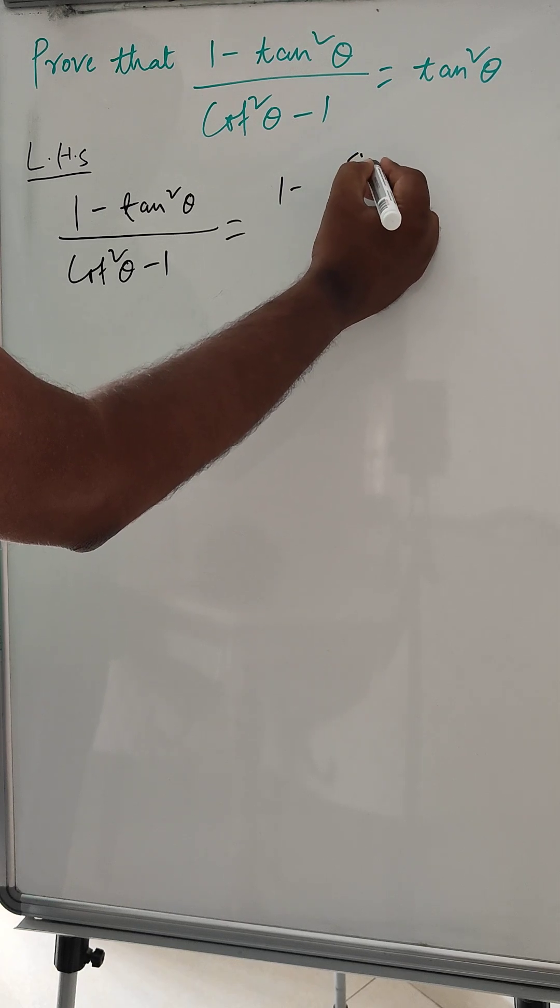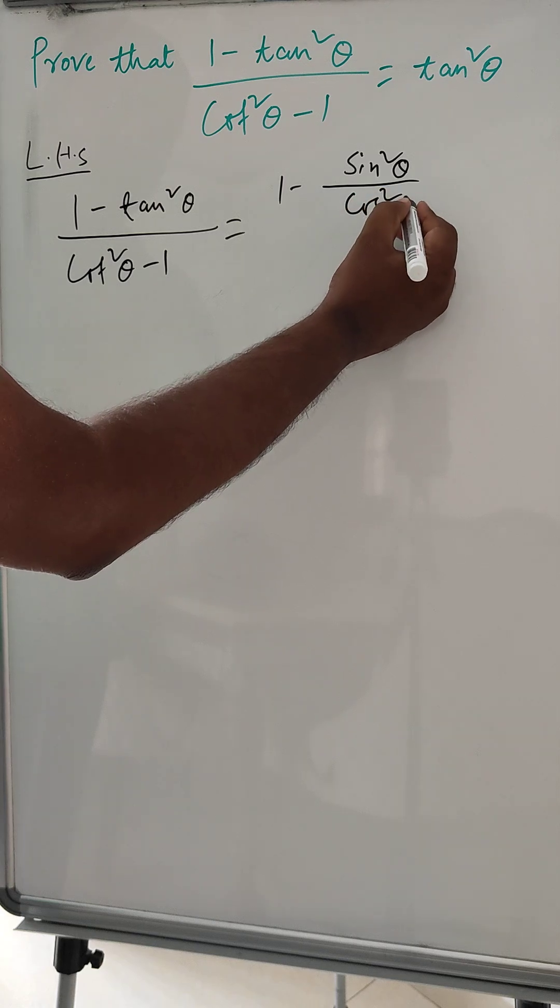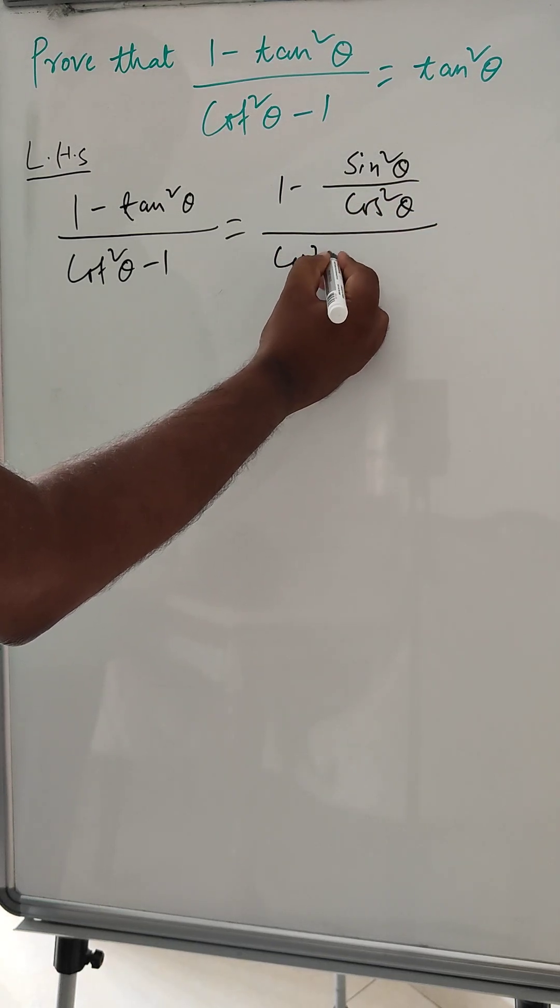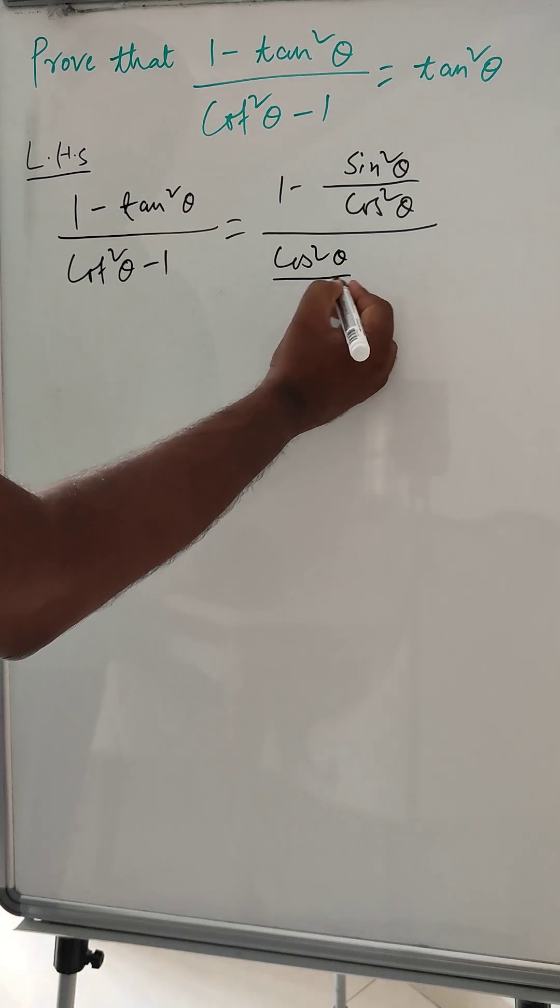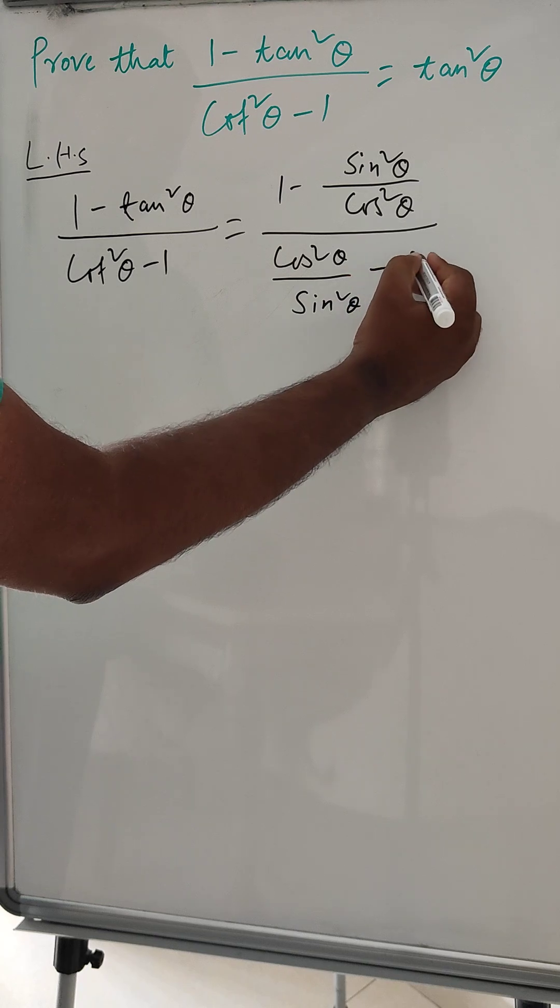So tan square can be sin square by cos square and this will become cos square theta minus sin square theta minus 1.